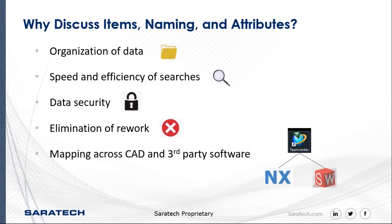Let's start by talking about what items are and why we're discussing item naming rules and attributes. First of all, organization of data is huge — that's basically the essential reason why we have TeamCenter. Being able to see similar types of data is extremely important, and item types and naming rules allow us to do that. If we have a name that pertains to a rocket instead of a car, for instance, that's going to help us organize data more efficiently. Speed and efficiency of searches is also a huge one — we can customize searches to enable accurate results and quickly find the products and parts we're working with.